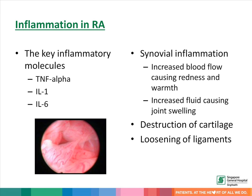The key inflammatory molecules are tumor necrosis factor alpha, interleukin-1, and interleukin-6. The increased blood flow in synovial inflammation leads to redness and heat, and the increased fluid causes joint swelling. Chronic inflammation leads to destruction of the cartilage and loosening of ligaments.